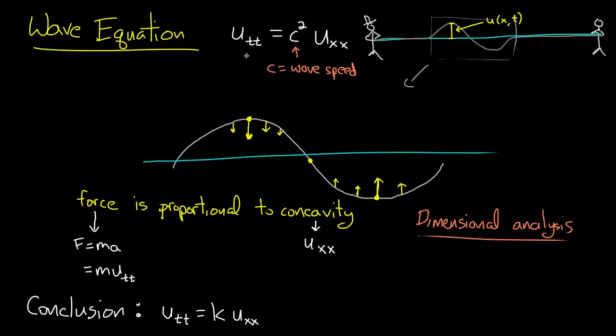The second derivative with respect to time, the dimensions of u_tt are length over time squared. On the other hand, u_xx, that's length over length squared. So that's simply 1 over length. Dimensions are 1 over length.